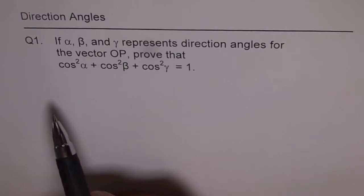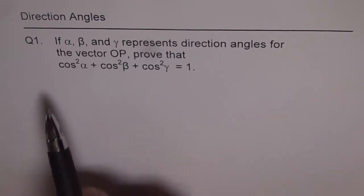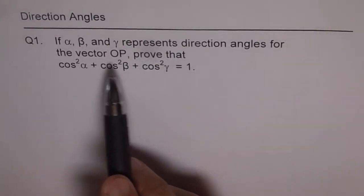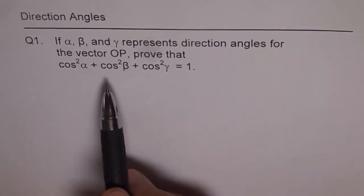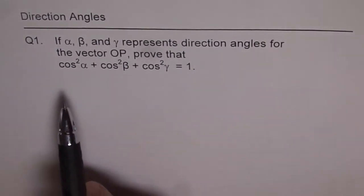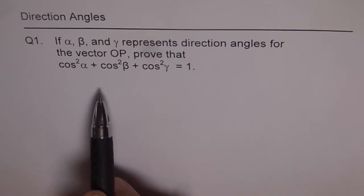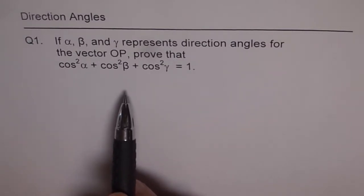So question number 1 is on direction angles. If alpha, beta and gamma represents direction angles for the vector OP, prove that cos square alpha plus cos square beta plus cos square gamma equals to 1.